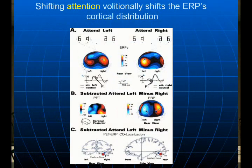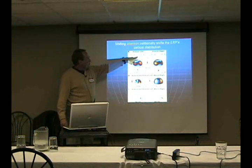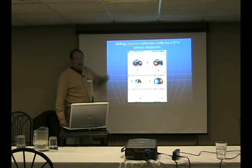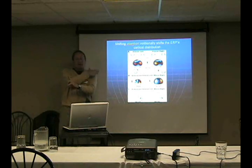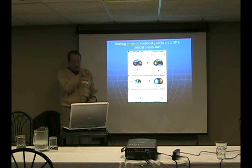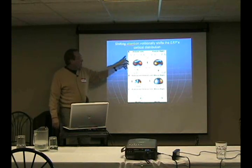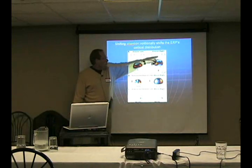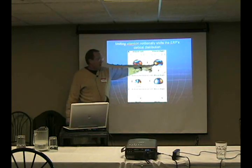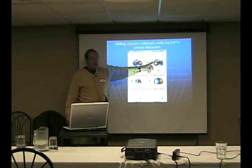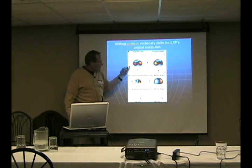Shifting attention can shift the ERP cortical distribution. In this experiment, subjects stare at a dot in the middle of the visual field but pay attention to the left side. The right side of the back of the head lights up with electronegativity. When they shift attention — not their gaze — to the right hemifield, the left side of the back of the head lights up with electronegativity. This demonstrates turning on and off these cortical locations.